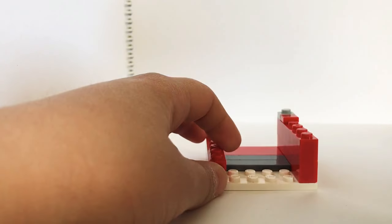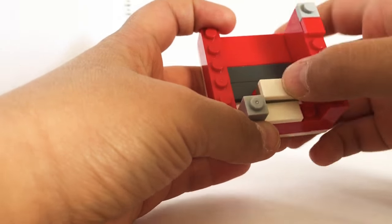Take this and put a 1x4 brick, 1x1 smooth, 1x1 brick. Put it right there. And then take 1x1 brick, 1x1 plate and 1x1 smooth. Put it right there.